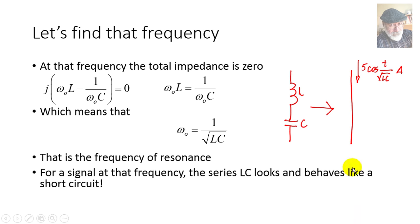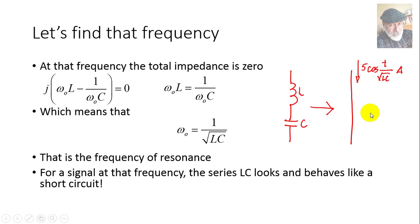At that frequency, the series combination of the inductor and the capacitor is represented simply by a wire — they cancel out at that one frequency. A current of frequency 1/√(LC) will find itself a perfect highway with no impedance in its path. Any current of any other frequency will find some impedance, so this behaves as a selective circuit — a filter.